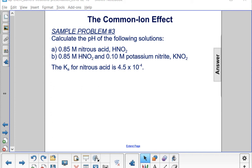Sample problem three: calculate the pH of the following solutions: a) 0.85 molar nitrous acid solution and b) 0.85 molar nitrous acid solution with 0.10 molar potassium nitrate. The Ka for nitrous acid is 4.5 times 10 to the minus fourth. So let's start with just writing the reaction for this.